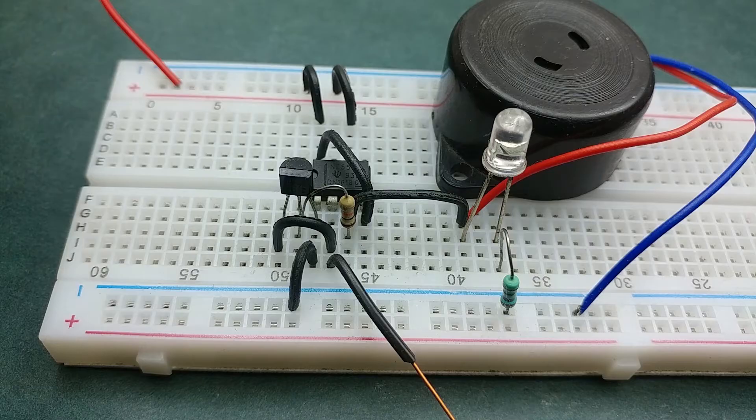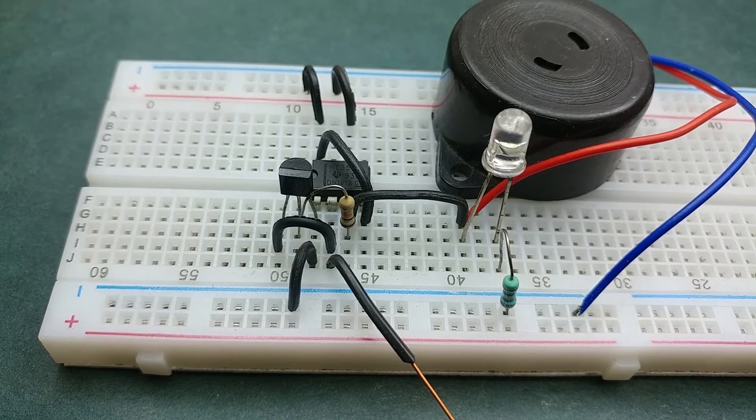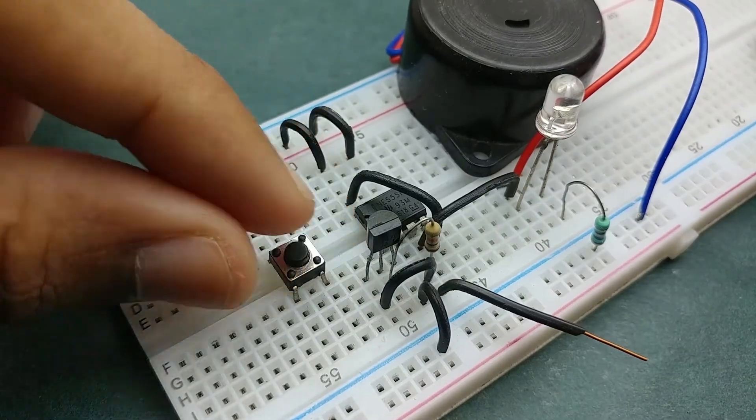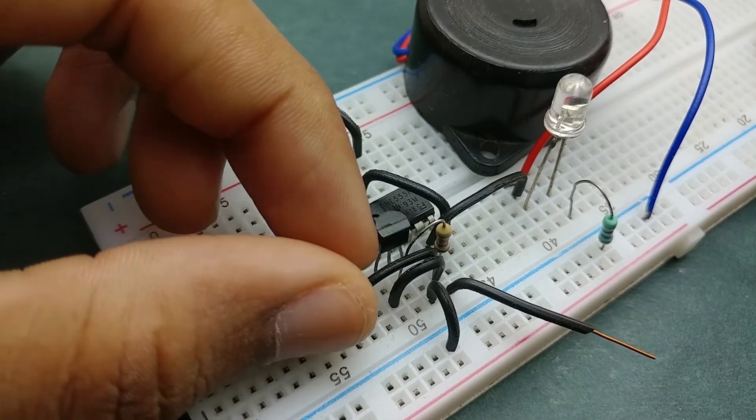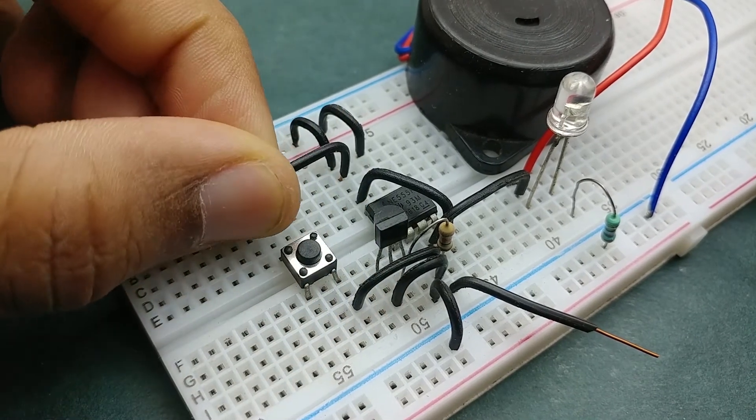So we need to add a kill switch that resets the output whenever required. For this, I used a momentary push button switch, connected one terminal to pin 2 of the 555 timer IC and the other terminal to positive rail.